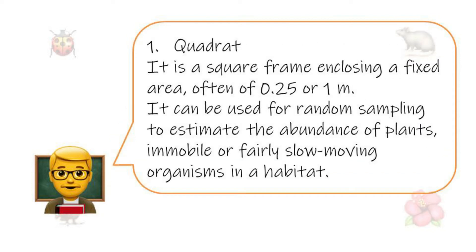The first equipment we can talk about is the quadrat. A quadrat is a square frame enclosing a fixed area, often of 0.25 or 1 meter squared. It can be used for random sampling to estimate the abundance of plants, immobile, or fairly slow-moving organisms in the habitat.